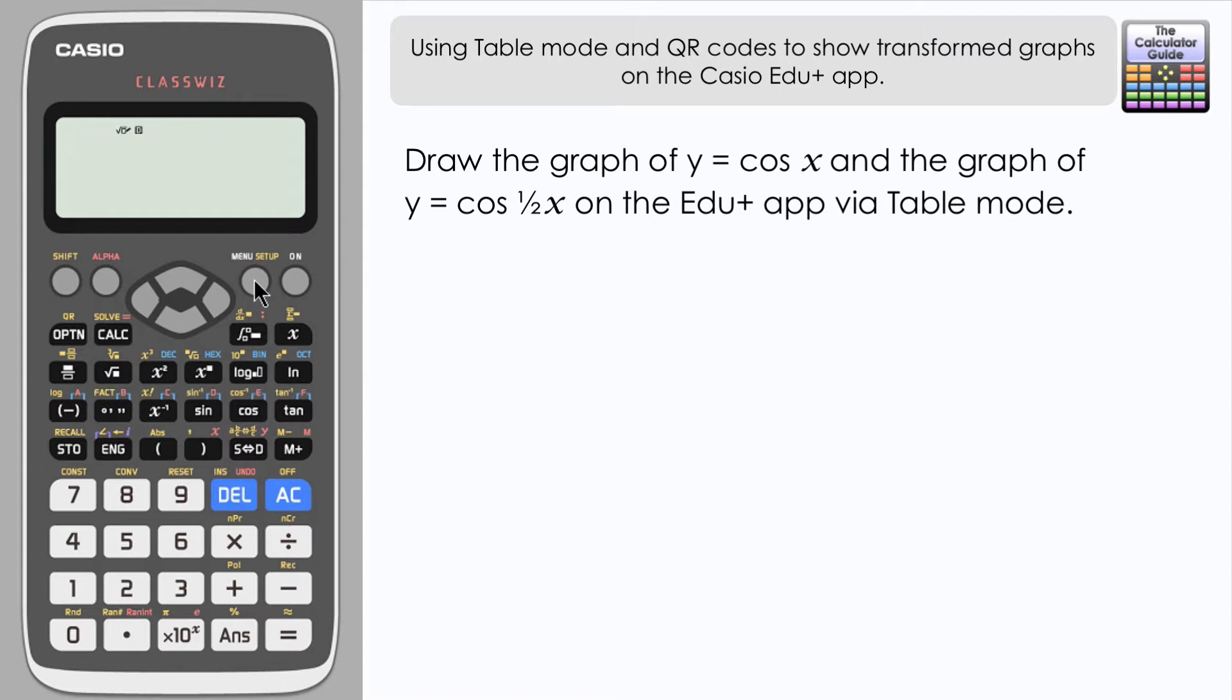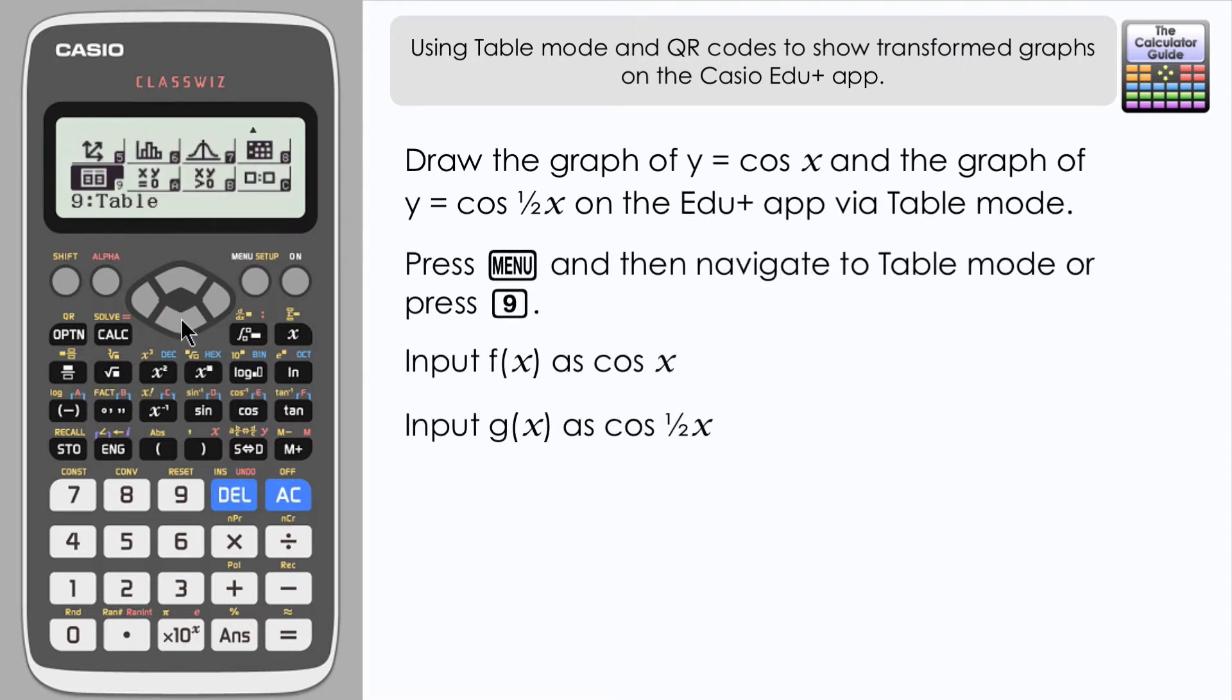Press menu and then down to table mode or press 9. Now we're going to input our f(x) as cosine x. Don't forget your brackets here and equals. Then g(x) we're going to input as our transformed function which is cosine of a half x. I'm going to input this as x over two and again best practice here to close your brackets, press equals.